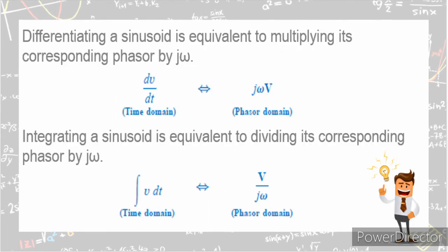Now, in differentiating a sinusoid, it is equivalent to multiplying its corresponding phasor by jω. Remember that j denotes the imaginary number, the square root of negative 1, and ω is our angular frequency, also equivalent to 2πf. So, if you have dv/dt in the time domain, that's equivalent to jωV in the phasor domain.